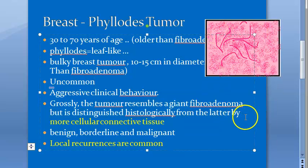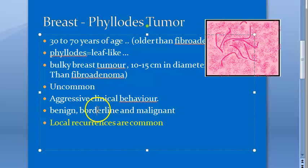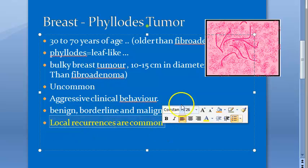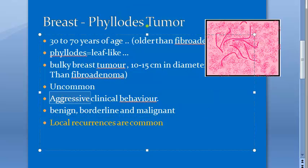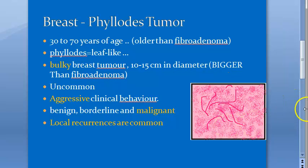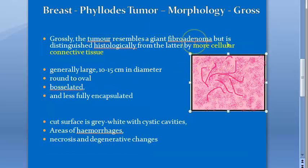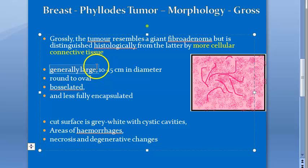Grossly, phylloides tumor is very similar to fibroadenoma — more like a giant fibroadenoma — but histologically you can distinguish it because the stroma is more cellular. They can be benign, borderline, or malignant, and local recurrences are common, contributing to their aggressive behavior.